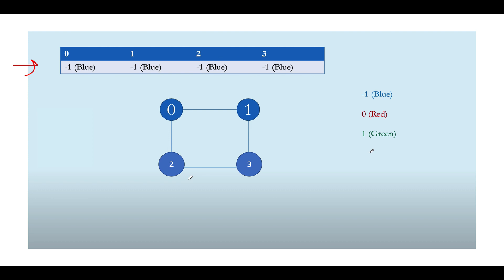Let's take the same example — 0 connected with 1, 1 with 3, 3 with 2, 2 with 0. Each node can have 3 possible states. Minus 1 is the default state (blue), meaning the node has not been visited. 0 means the node is marked red. 1 means the node is marked green. I've created a color array initialized to minus 1 (blue) for all nodes by default. Let's start the iteration.